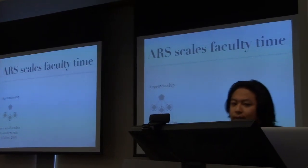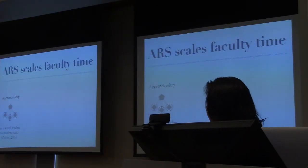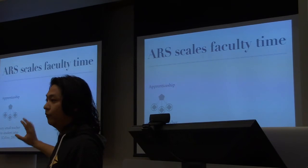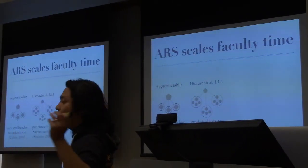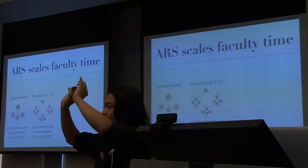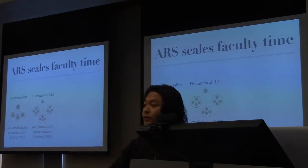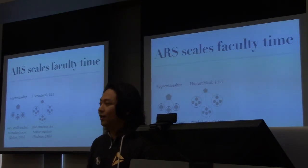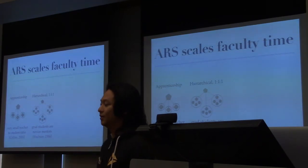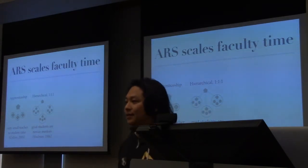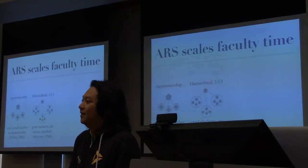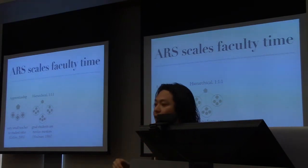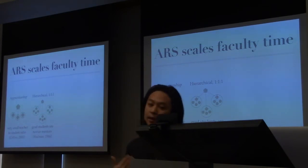One of the core ideas behind the Agile Research model is that it scales faculty time. The apprenticeship model doesn't scale well for faculty time. You might imagine a hierarchical model where faculty mentor grad students and grad students mentor undergrads — but the challenge is that as undergraduate students are learning how to do research, that doesn't necessarily make them effective mentors. Shulman's learning science result effectively says that being good at doing something doesn't mean you're a good teacher of it. What ends up happening is undergrads working under grad students could still end up doing rote tasks.